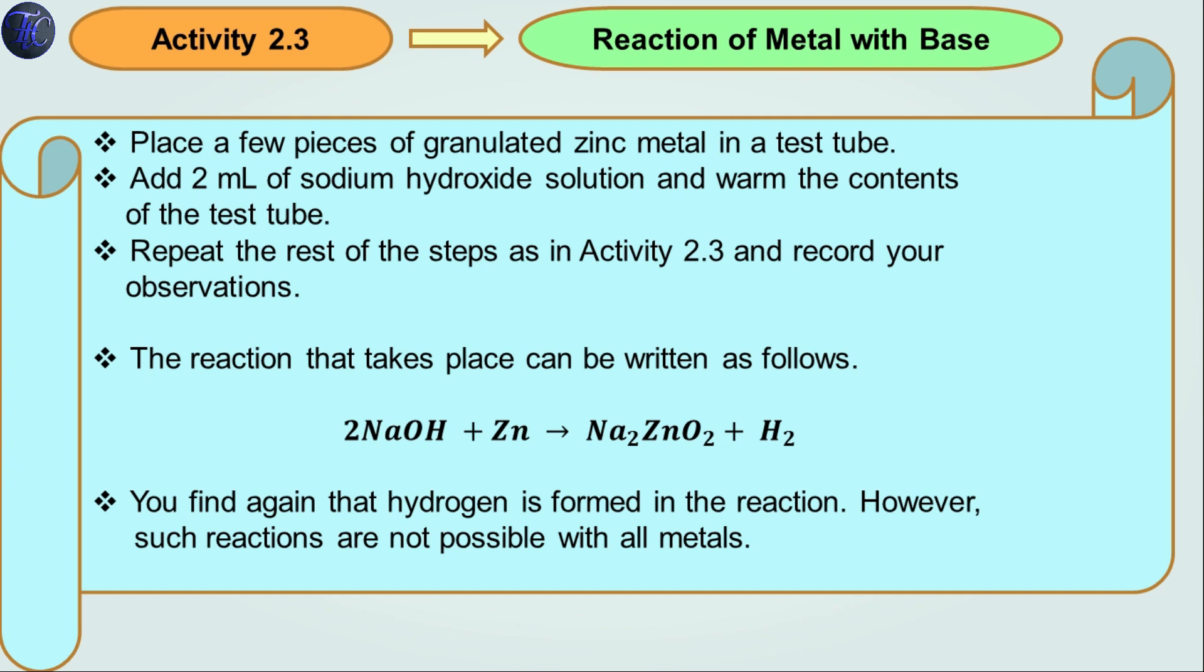What we will observe is the evolved gas will pass through the soap solution with the help of the delivery tube and bubbles are formed. When we take a burning candle near those bubbles, a pop sound will come and the candle will put off, signifying the presence of hydrogen gas. The reaction that takes place can be written as: 2NaOH plus Zn gives Na2ZnO2 plus H2, meaning hydrogen gas is produced when metal reacts with base.